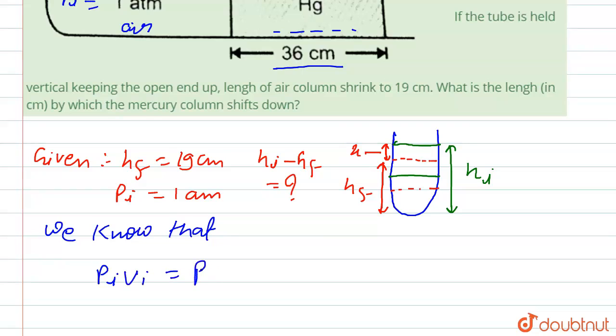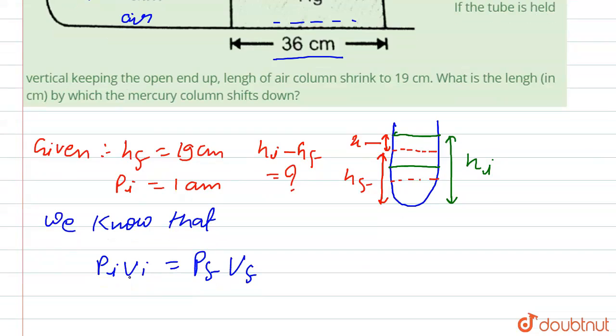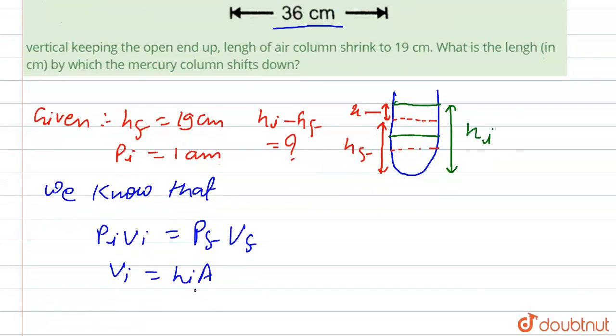As we know that P_i V_i is equal to P_f V_f. P_i is initial pressure, V_i is initial volume, P_f is final pressure, V_f is final volume. So P_i is given 1 atm. V_i is h_i into A, where h is height of the tube and A is cross sectional area of glass tube.